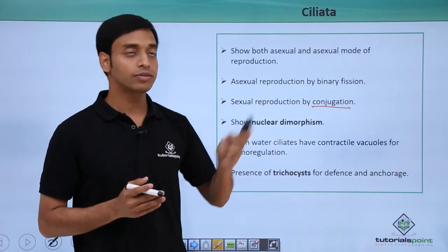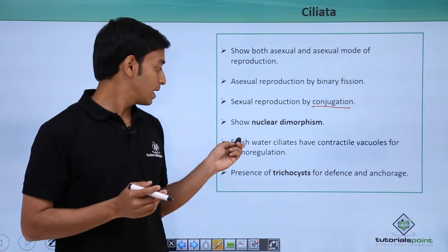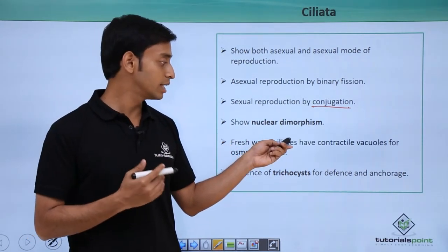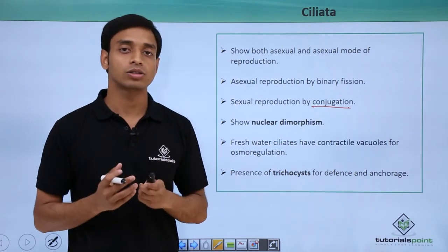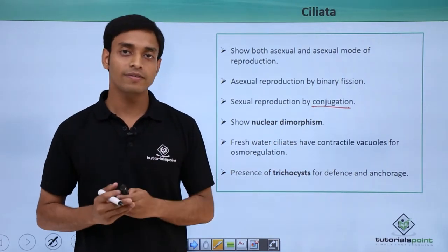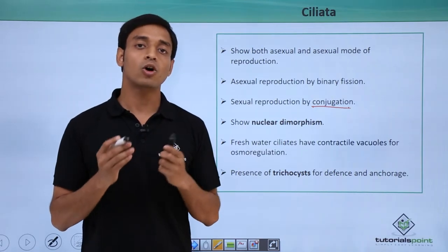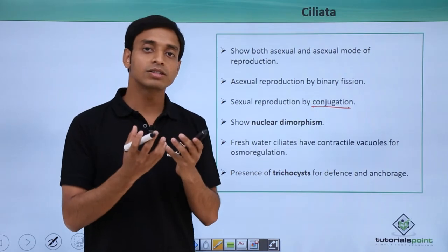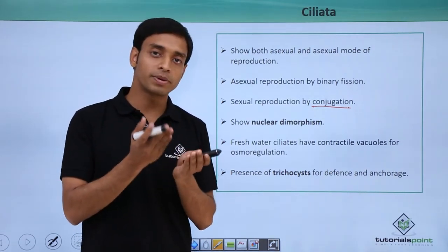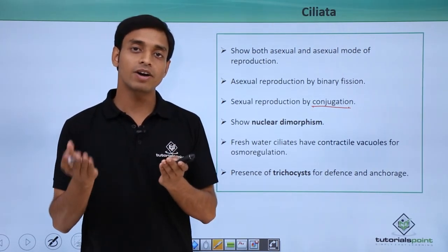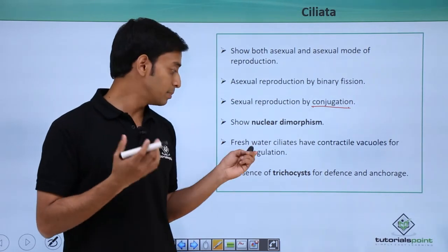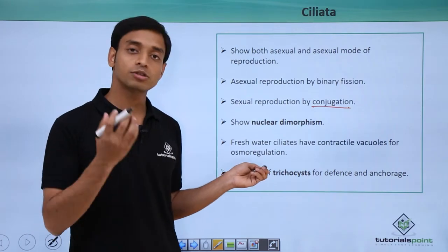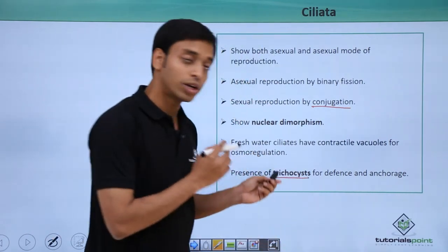Ciliata also show nuclear dimorphism, which means various forms or shapes of the nucleus can be present. The freshwater ciliates have contractile vacuoles, whose function is osmoregulation — they help in maintaining osmotic pressure, balancing it between the environment and the cell.